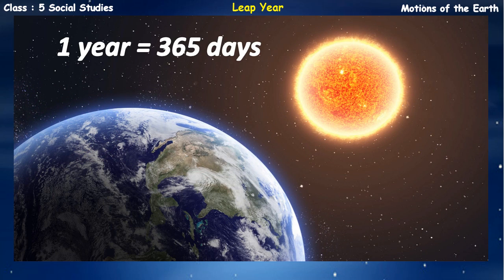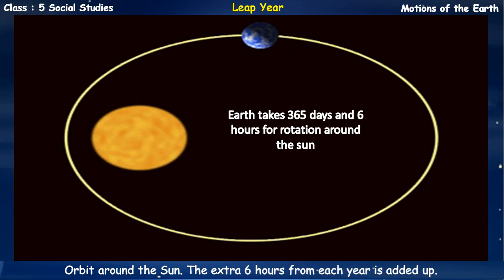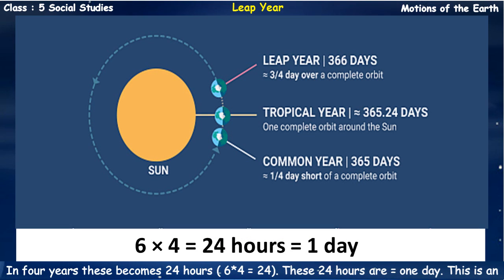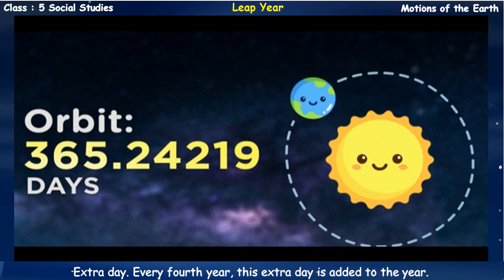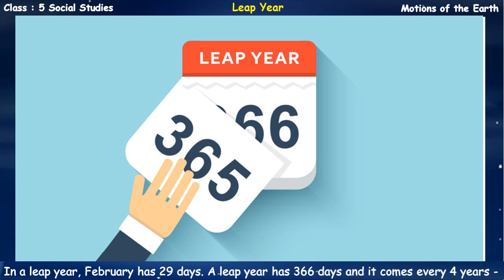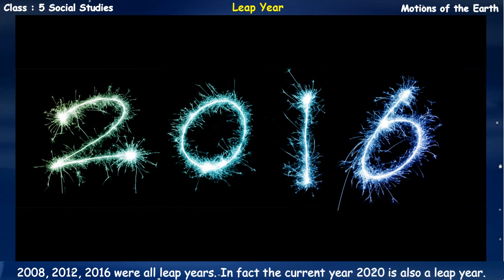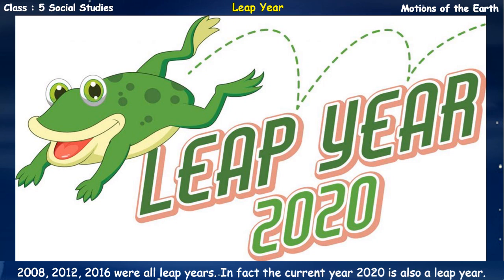Leap Year. A year usually has 365 days, but the Earth takes 365 days and 6 hours for a complete orbit around the sun. The extra 6 hours from each year add up – in 4 years this becomes 24 hours, which equals one day. Every 4th year, this extra day is added to the year. The year with an extra day is called a leap year. The extra day is added to February, so in a leap year, February has 29 days. A leap year has 366 days and comes every 4 years. 2008, 2012, 2016, and 2020 were all leap years.